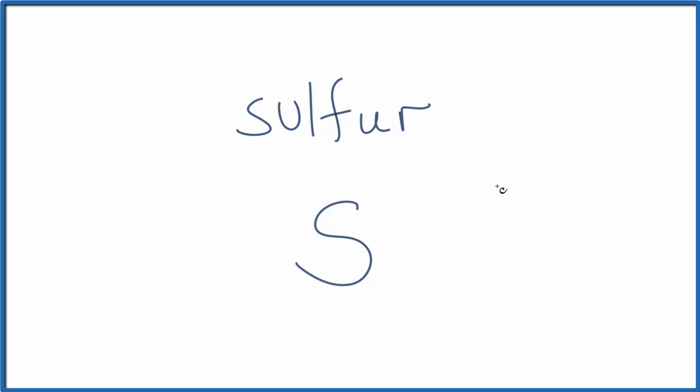So sulfur is in group 16, sometimes called 6A. That means it has six valence electrons. So let's put those six valence electrons around the sulfur. So that's the Lewis structure for just sulfur, what we find on the periodic table.